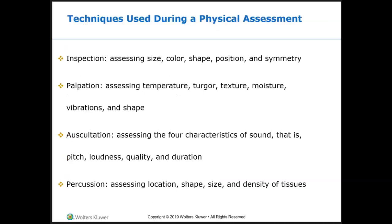Techniques for gathering physical health assessment data are inspection, palpation, and auscultation. Inspection: you're going to inspect each area of the body for size, color, shape, position, movement, and symmetry — comparing one side with the other — and looking for any abnormalities. Palpation uses the sense of touch to gather important assessment data, such as palpation of the pulses, skin temperature, texture, turgor, skin moisture, dryness, and shape. Auscultation is listening with a stethoscope to sounds produced within the body, such as lung sounds, heart sounds, and abdominal sounds.